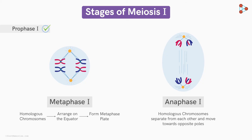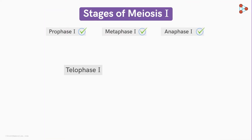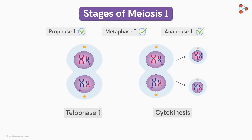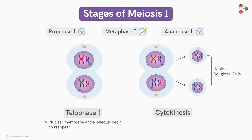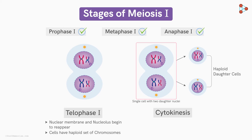The cell then undergoes telophase I along with the first cytokinesis. The nuclear membrane envelopes the chromosomes and a nucleolus reforms as well. The two new daughter cells obtained are now haploid, formed from the diploid parent cell. However, chromosomes are still seen attached to their sister chromatids.